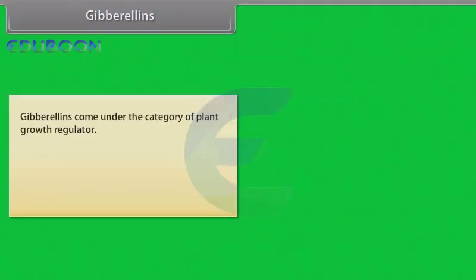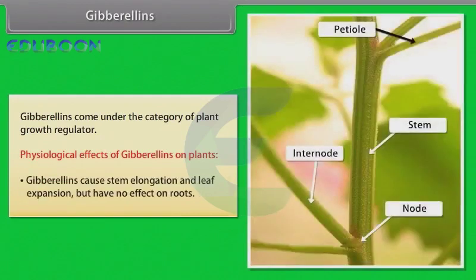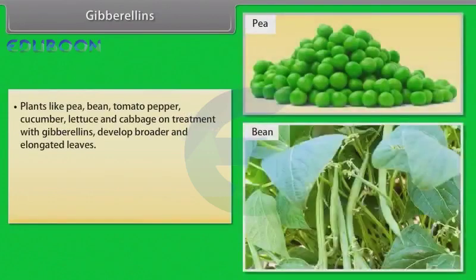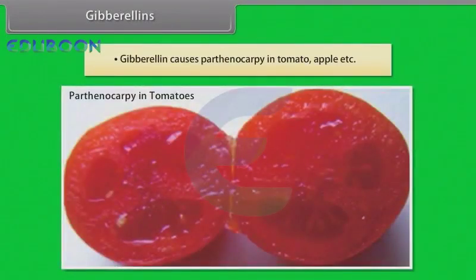Gibberellins come under the category of plant growth regulators. Physiological effects of gibberellins on plants: Gibberellins cause stem elongation and leaf expansion but have no effect on roots. They promote seed germination in lettuce, cereals, etc. Plants like pea, bean, tomato, pepper, cucumber, lettuce and cabbage, on treatment with gibberellins, develop broader and elongated leaves. Gibberellins break dormancy of buds and tubers, but in root tubers, the application of gibberellic acid inhibits the development of root tubers. Gibberellins cause parthenocarpy in tomato, apple, etc.